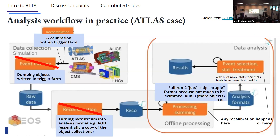In practice — this is the analysis workflow from Atlas — you get data from the detector, do reconstruction and calibration within the trigger farm, because this is what you need to make a decision whether the event is kept or not. Then you dump the objects written in the trigger farm; you don't do extra filtering, you just take everything selected. That's your raw data — not really raw, it's already processed. You turn the byte stream into an analysis form, for example an AOD, which is a copy of the object collections written out in the trigger system.